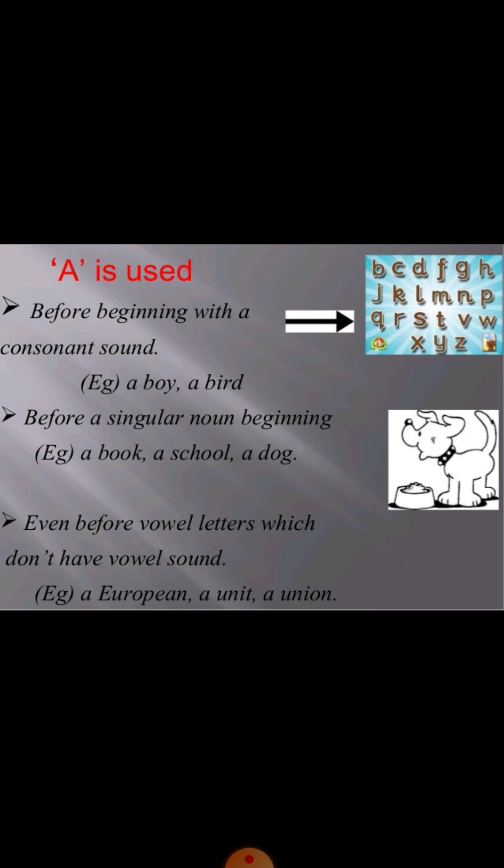A is used before consonant sounds. Examples: a boy, a bird — b is a consonant. A is also used for a singular noun. When we talk about one thing, we use a. Even before vowel letters that don't have a vowel sound, we use a — like a European, a unit.